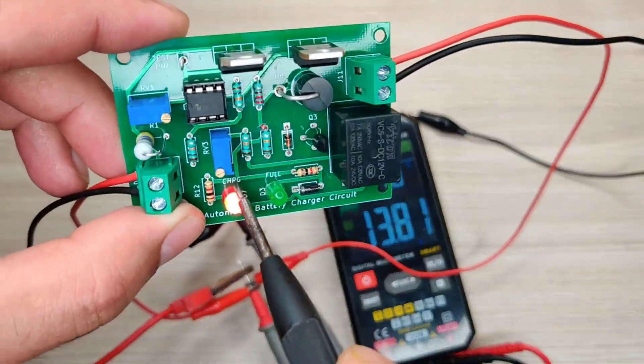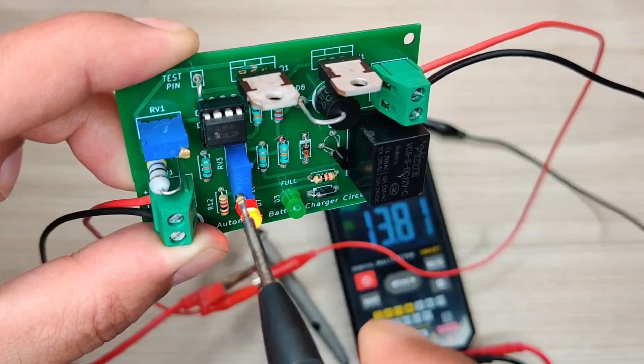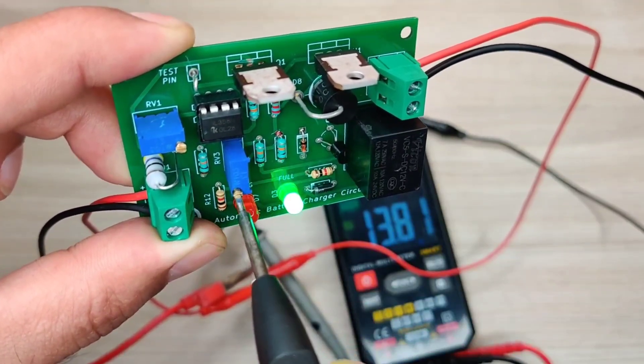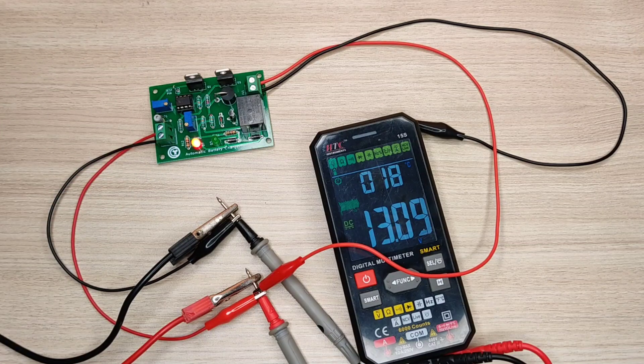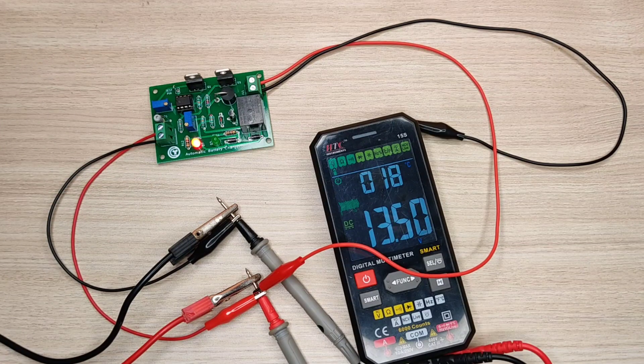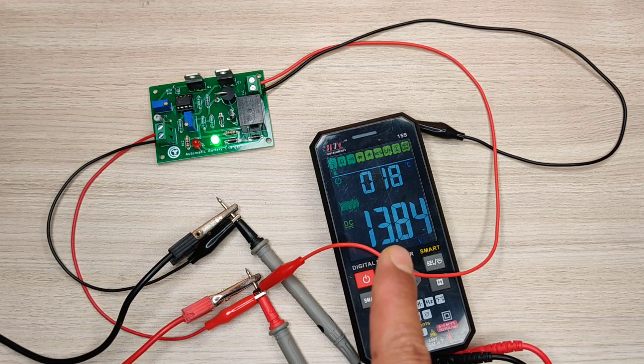Then adjust the potentiometer slowly till green LED turns on. As you can see on increasing voltage to 13.8 volts, cutoff green LED turns on.